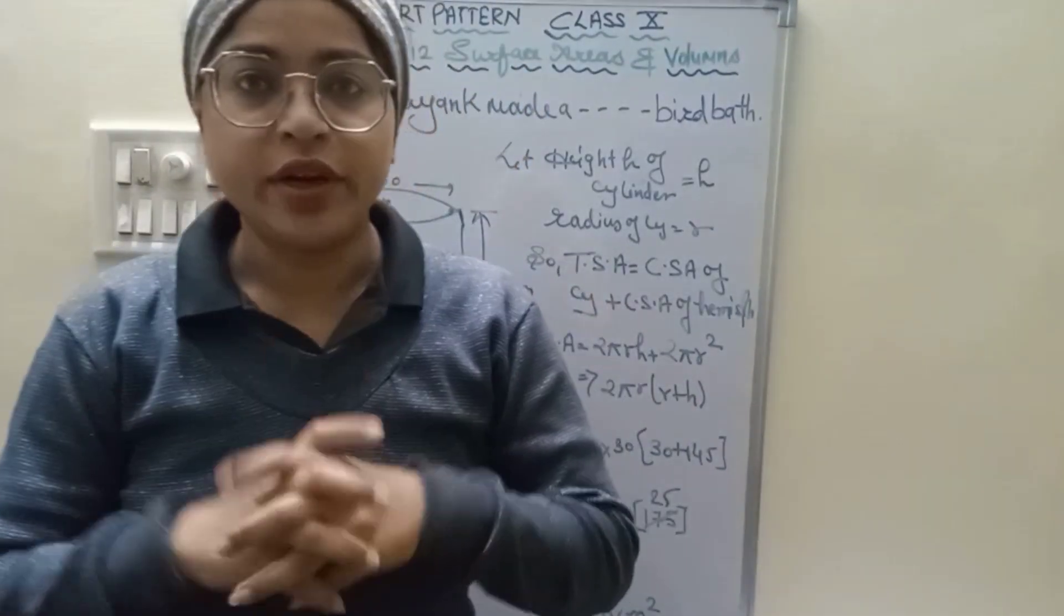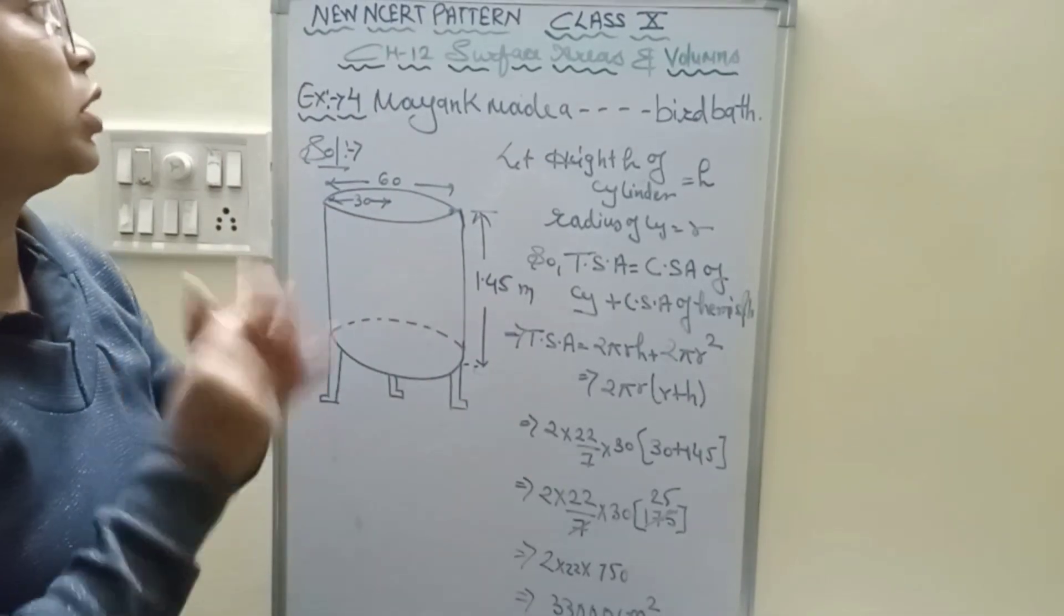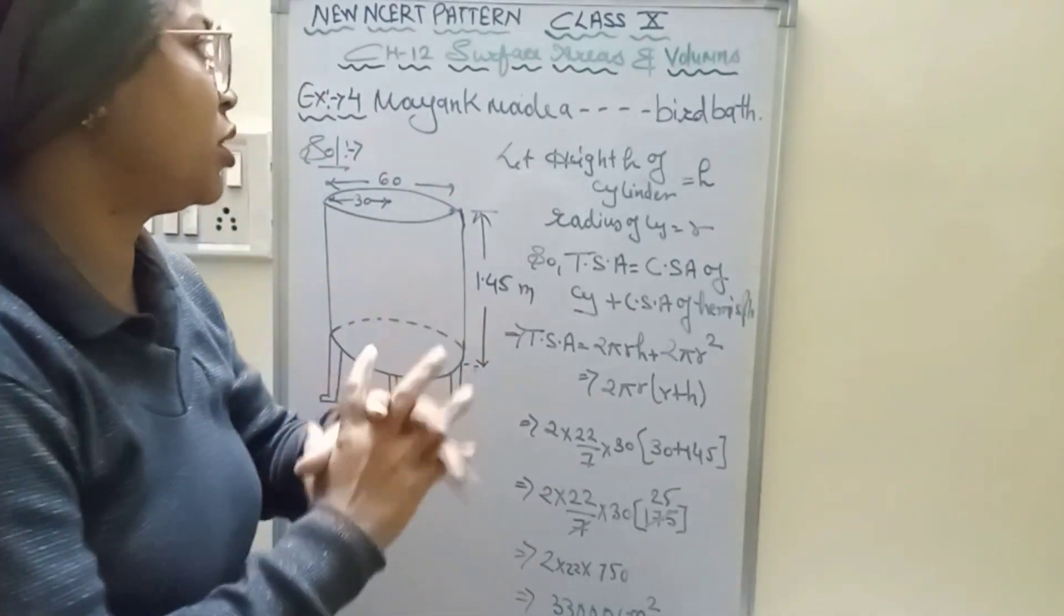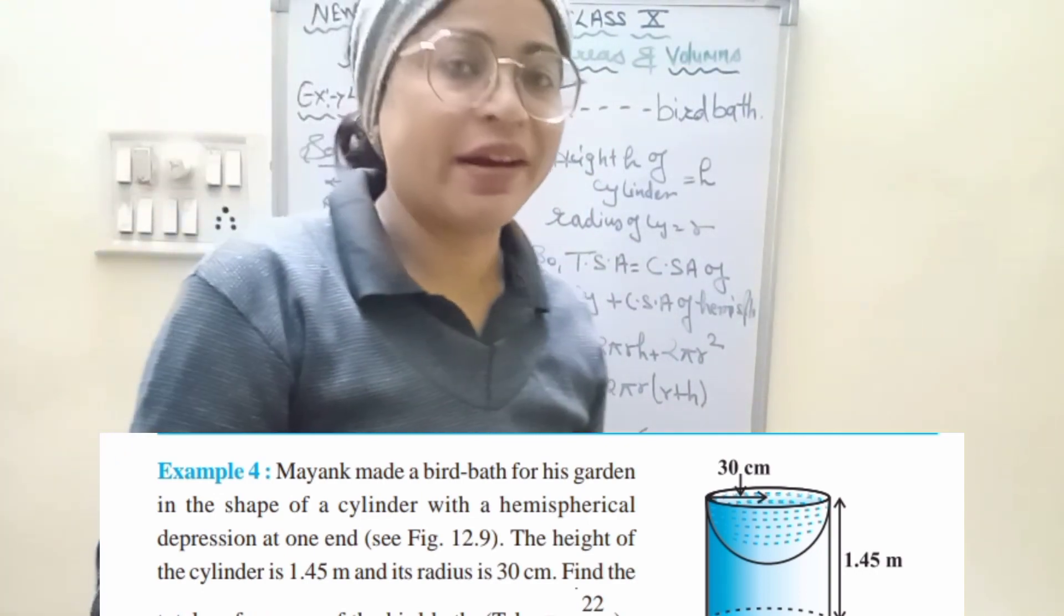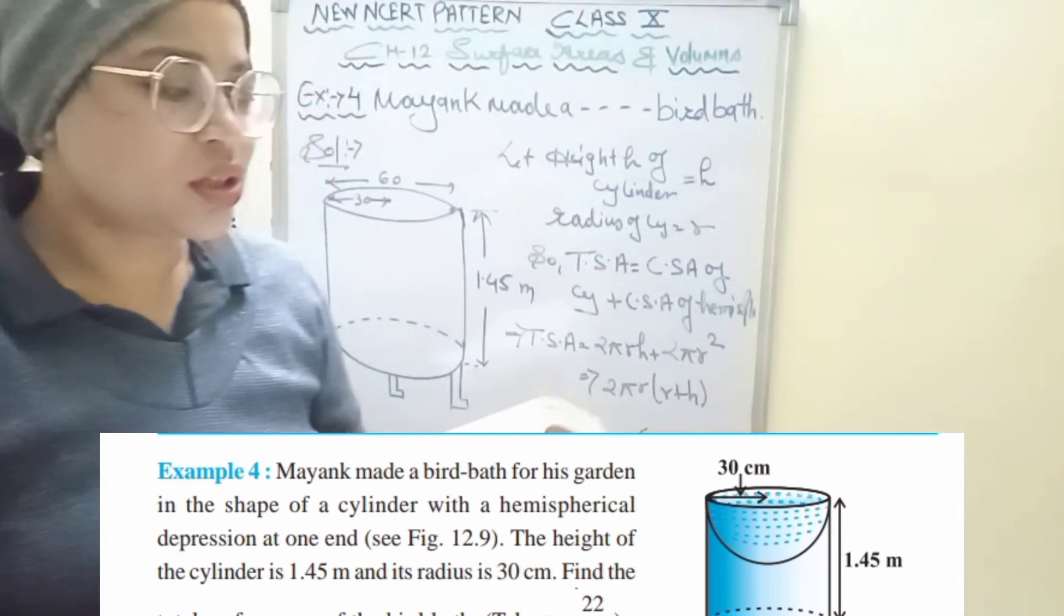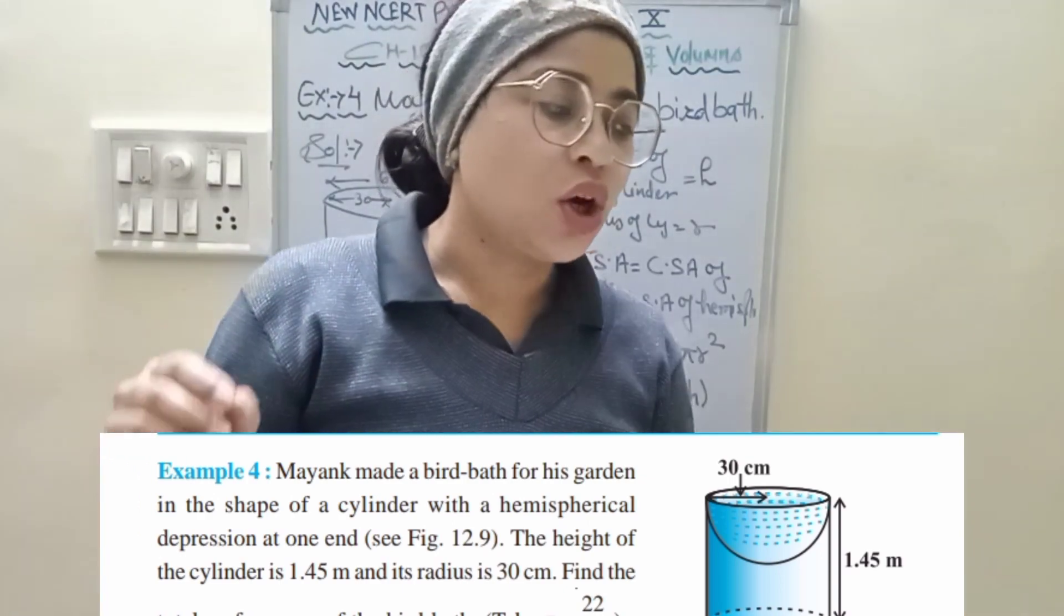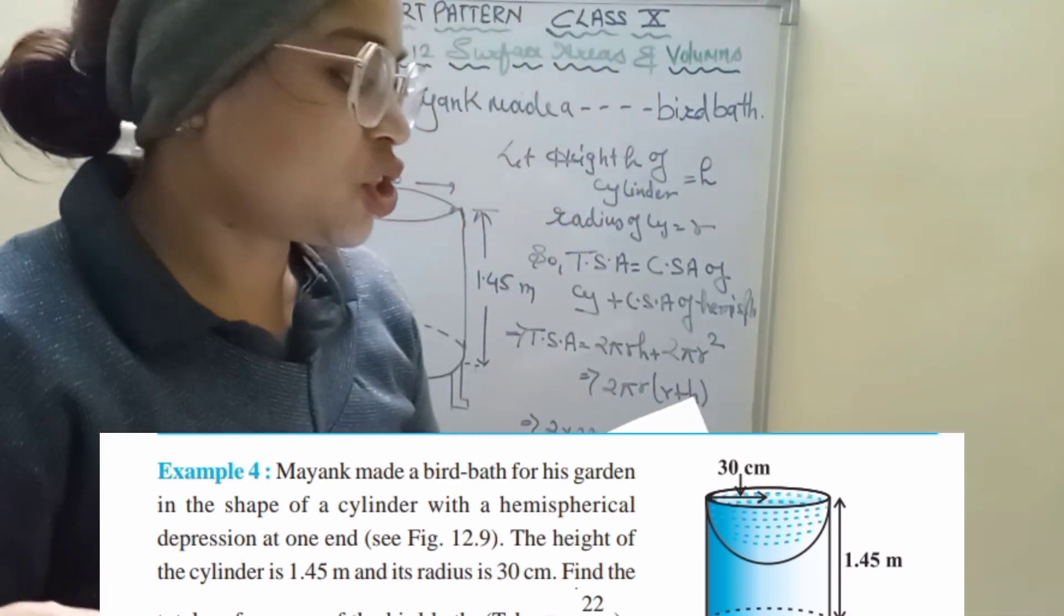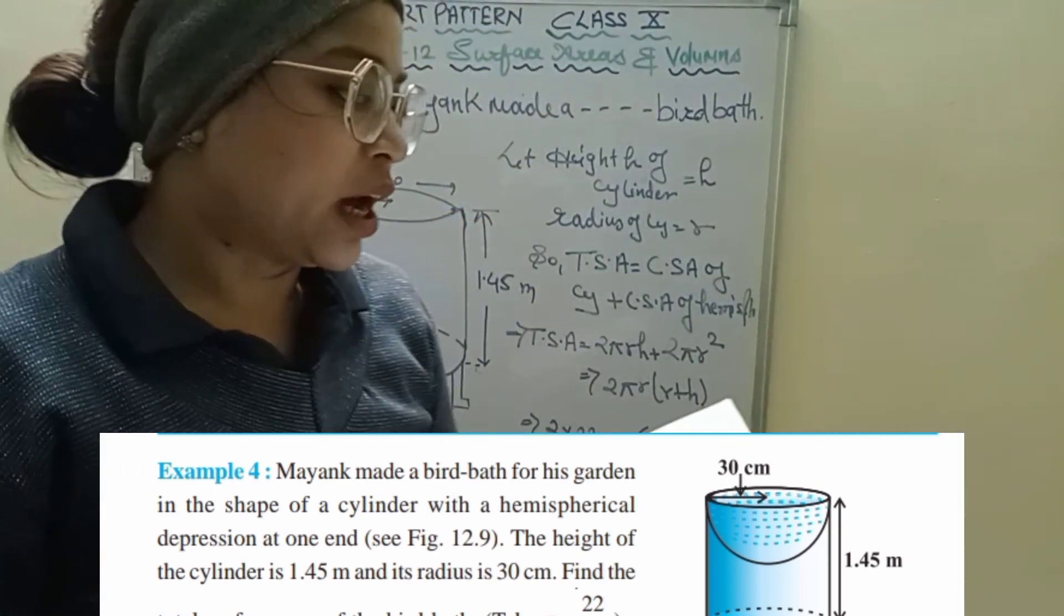Hey everyone, how are you all? I hope you all are doing well and prepared for your studies. So here we discuss example number four of the new NCERT pattern, chapter number 12, Surface Area and Volume. The question is: Mayank made a bird bath for his garden in the shape of a cylinder with a hemispherical depression at one end.